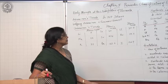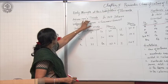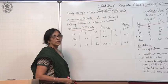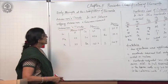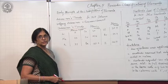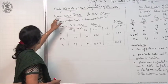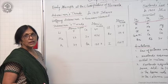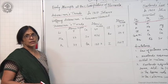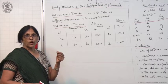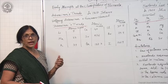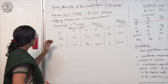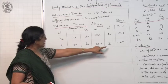Earlier attempts were made by Dobereiner. In 1817, Johann Wolfgang Dobereiner, a German scientist, designed a method to classify the elements in the form of triads, which are called Dobereiner's Triads. He grouped three elements together, keeping in mind that the atomic mass of the middle element is the average of the atomic masses of the other two elements. This is one triad, second triad, and third triad.